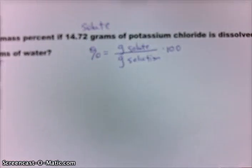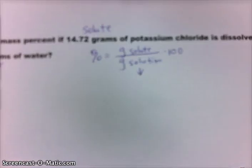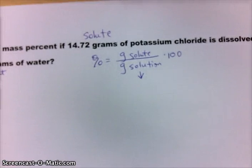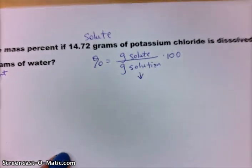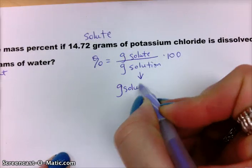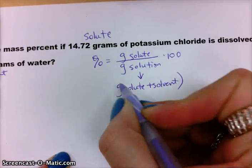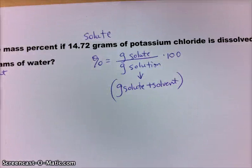Now one thing to remember is that the grams of solution is the total in the solution. So the two components of the solution are the solute and the solvent. So grams of solution is actually grams of solute plus solvent. So that is actually what's in the denominator. It's the solute plus the solvent.